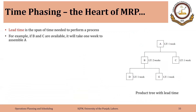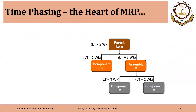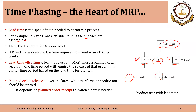Here is another simple example. If B and C are available, it will take one week to assemble A because its lead time is one week. Depending upon the requirement of a certain quantity of A, we will make sure to have B and C available so that we can make A on time. Similarly, if D and E are available, it takes two weeks to make B. So the lead time for A is one week and for B it is two weeks. The formal definition of lead time offsetting is a technique used in MRP where a planned order receipt in one time period will require the release of that order in an earlier time period, based on the lead time of the item.